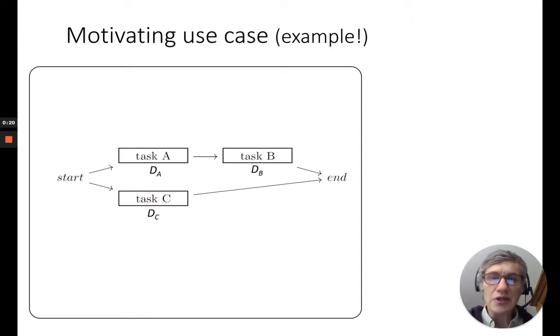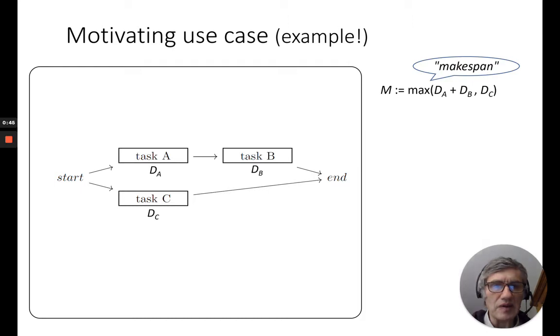Let me introduce the context of the present research by this motivating use case. It's a basic classical job scheduling problem with three tasks A, B and C. We can calculate the total duration of this schedule, which is called the makespan, with this small formula where DA, DB and DC are the respective duration of the tasks.